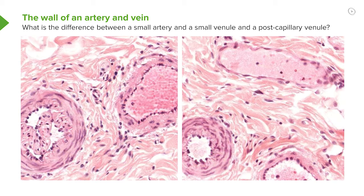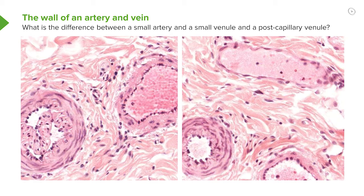On the right-hand section, down the bottom, again, large lumen, relatively small wall — that is also a small vein. So that's how you can tell the difference between a small artery and a small vein closely next to each other in the tissue. Look at the relative thickness of the walls of these two vessels relative to the lumen diameter.